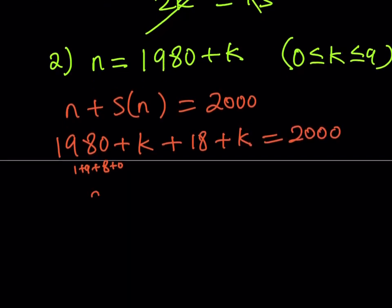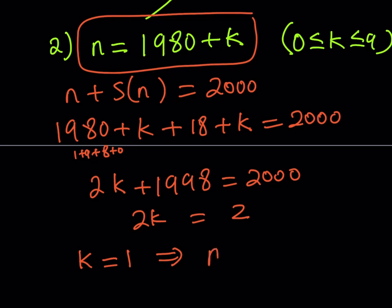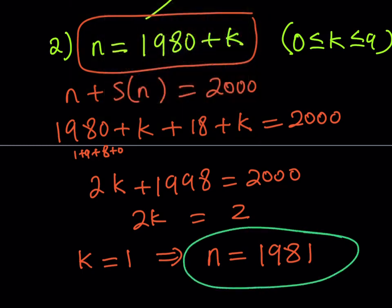So we should be getting something like 2k plus 1998 is equal to 2000. If you subtract, you're going to get 2k is equal to 2, and k is equal to 1. Now, we're not looking for the values of k, obviously, and remember, our assumption was that n is equal to this. So if you go ahead and replace k with 1, then you're going to be getting the n value, which is 1981. And that is the only solution to this equation, and this brings us to the end of this video.